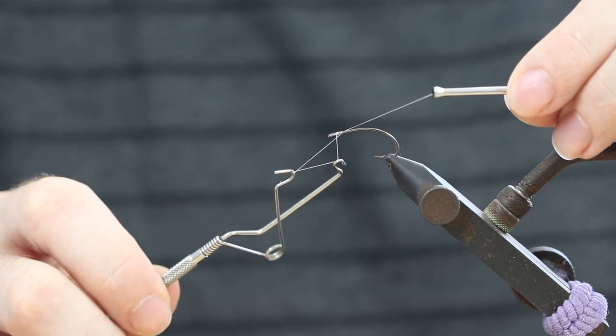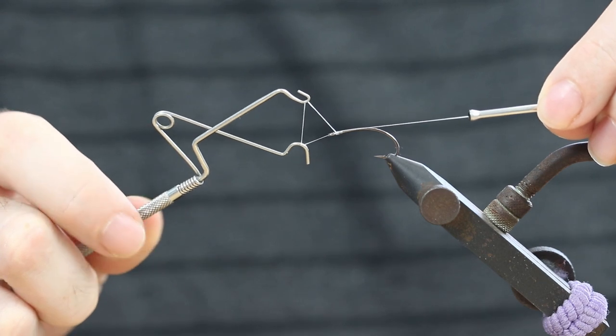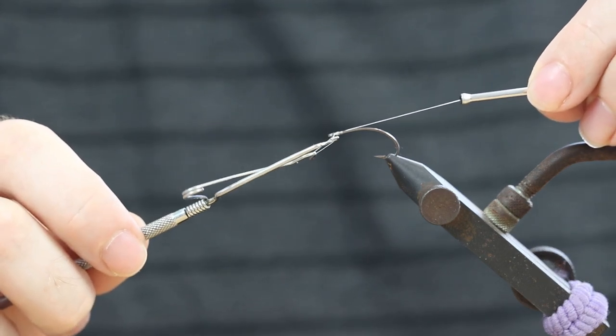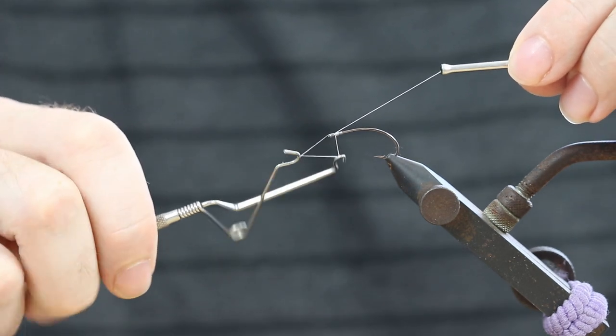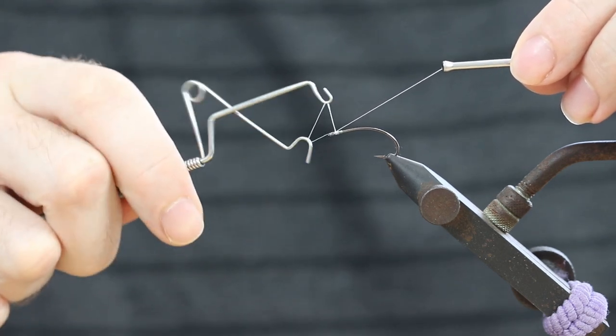What you then do is you turn the tool half a turn more. Bring this triangle loop or triangle above the hook and then you start turning the tool. Let's do five wraps.